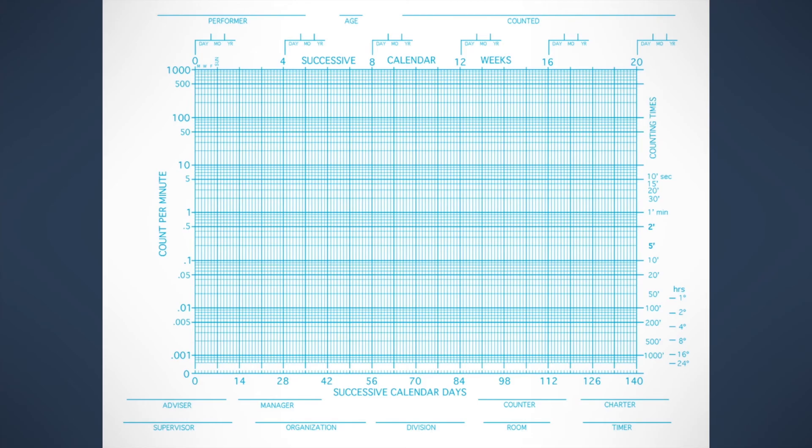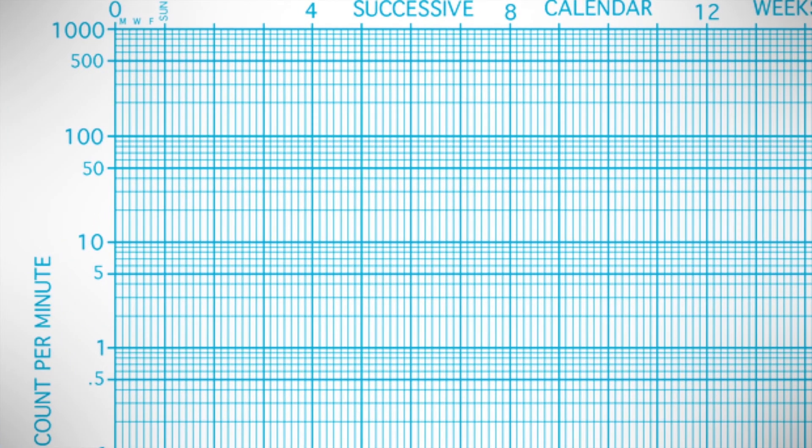Let's start with the left vertical axis. From the very bottom all the way up to the top, we start at as low as zero or one per 24 hour day, but generally the start point is once per a 16 hour waking day, all the way up to 1000 per minute. Now let's zoom in to just focus above the one for a minute.